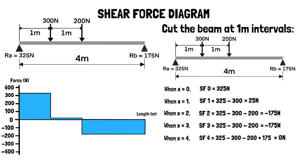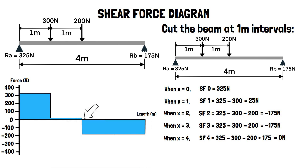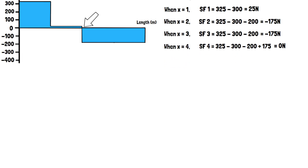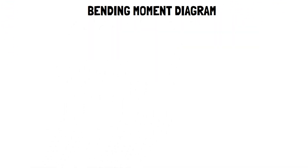The diagram shows how the shear force acting on the beam changes along its length, and also identifies the point of maximum shear stress when the line crosses the neutral axis. Next, we'll look at how to draw the bending moment diagram for the same beam.